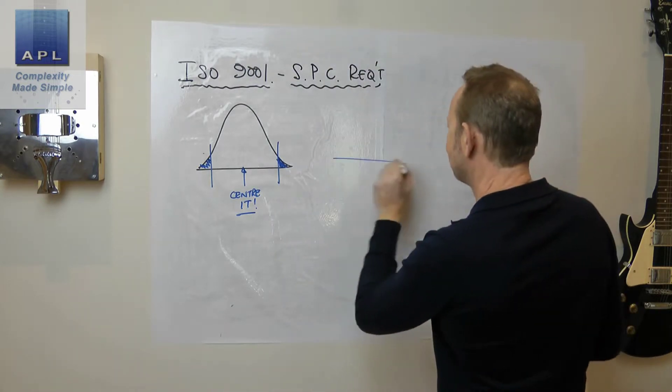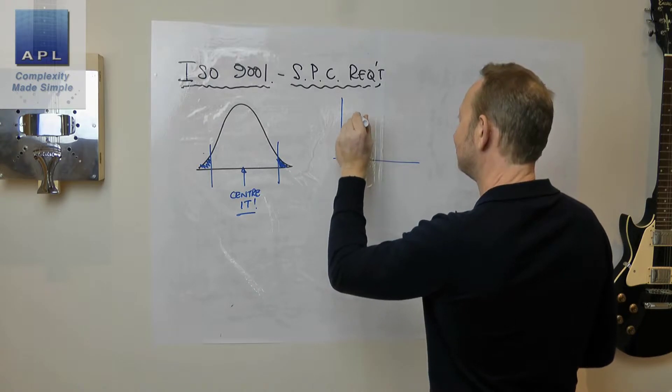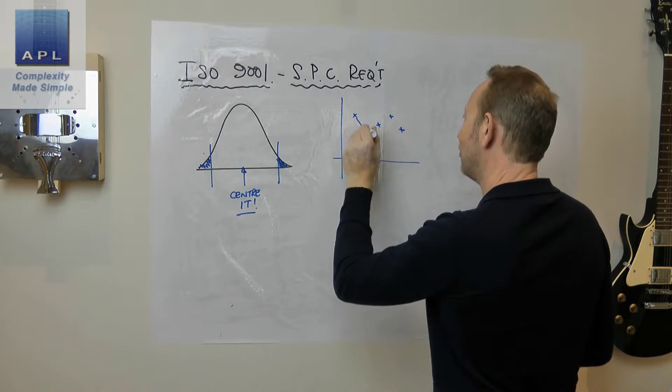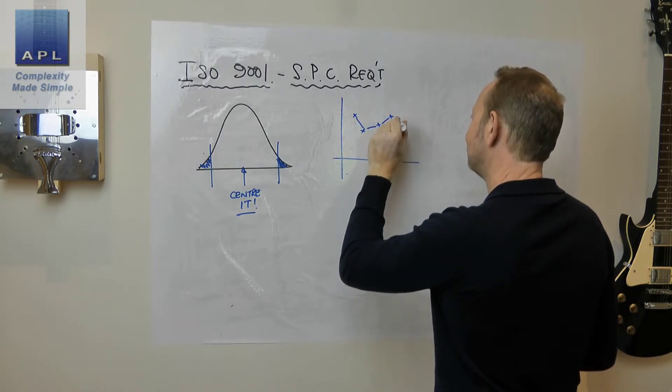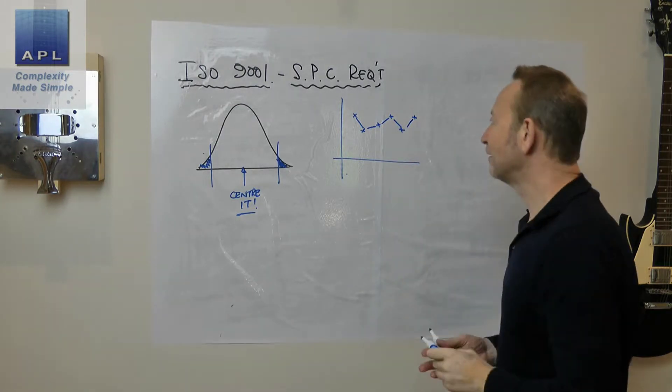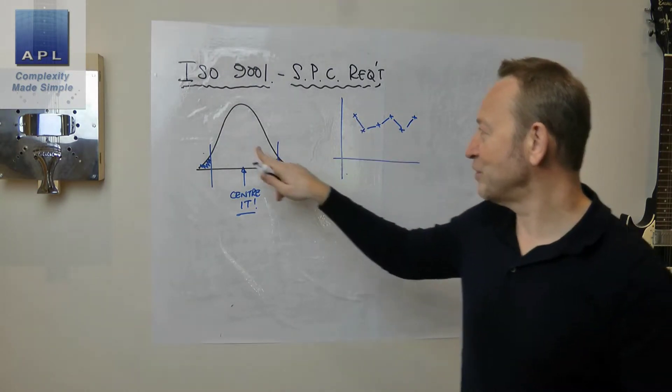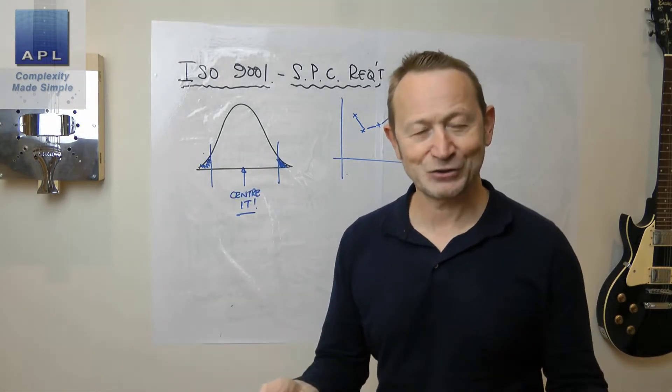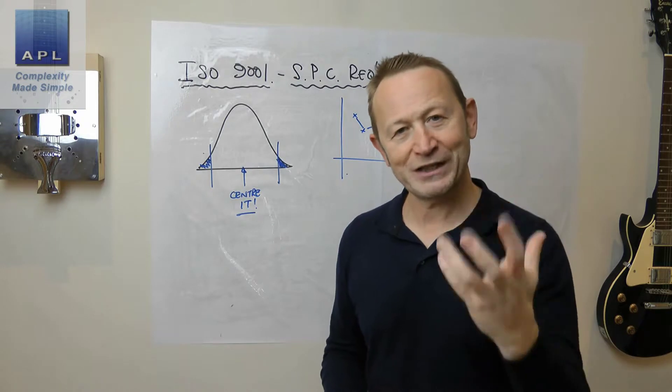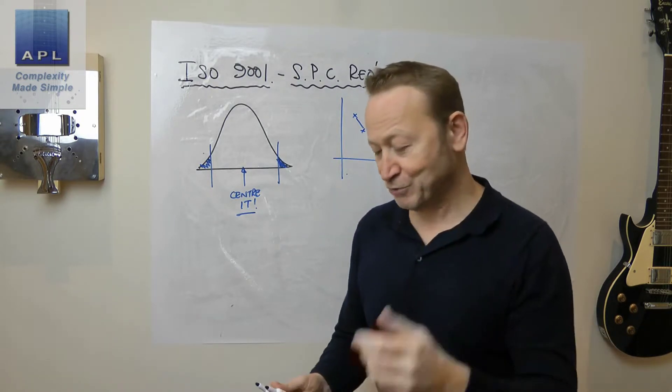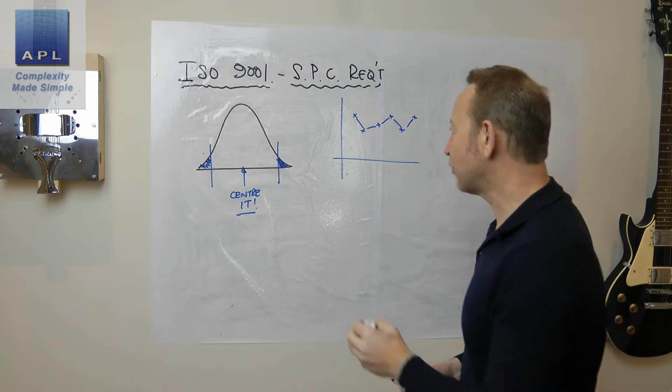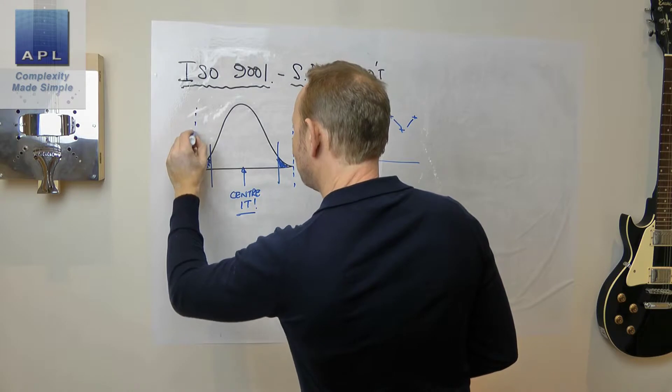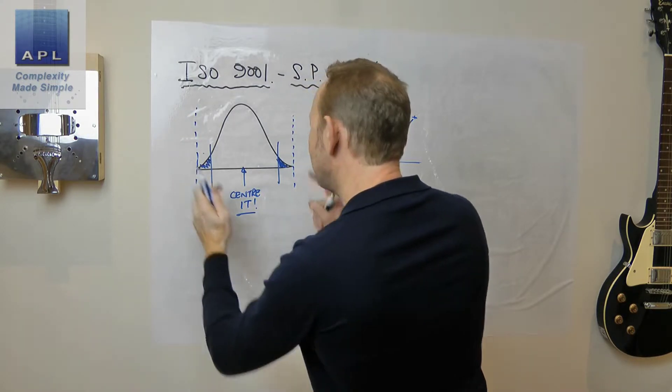Because he doesn't see that, what does the operator see? Well, of course what the operator sees is one data point at a time. And he has to judge from one data point whether he centered it or not. Well, how the heck does he do that? Well the way he does it is to use some rules. He uses a control chart. What the control chart does is it communicates this picture to him.